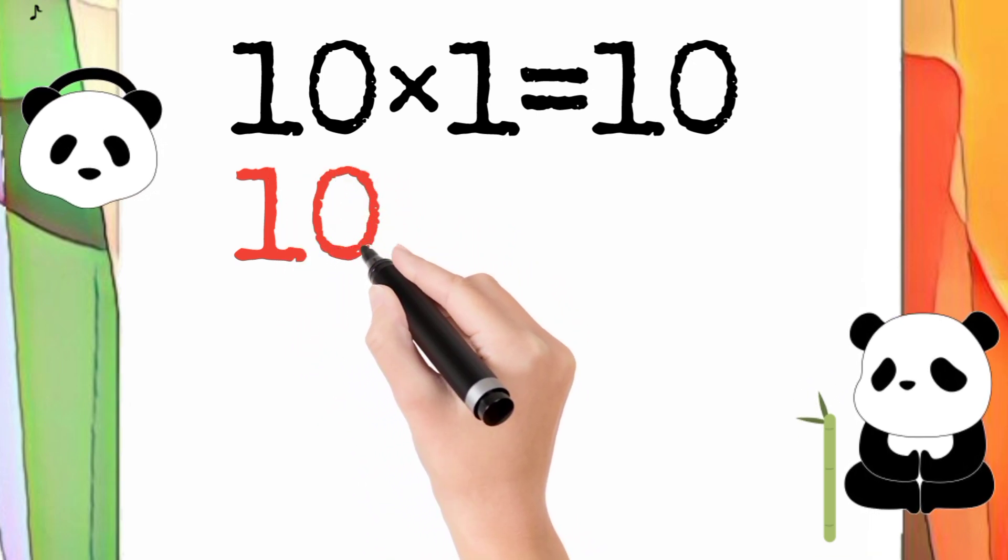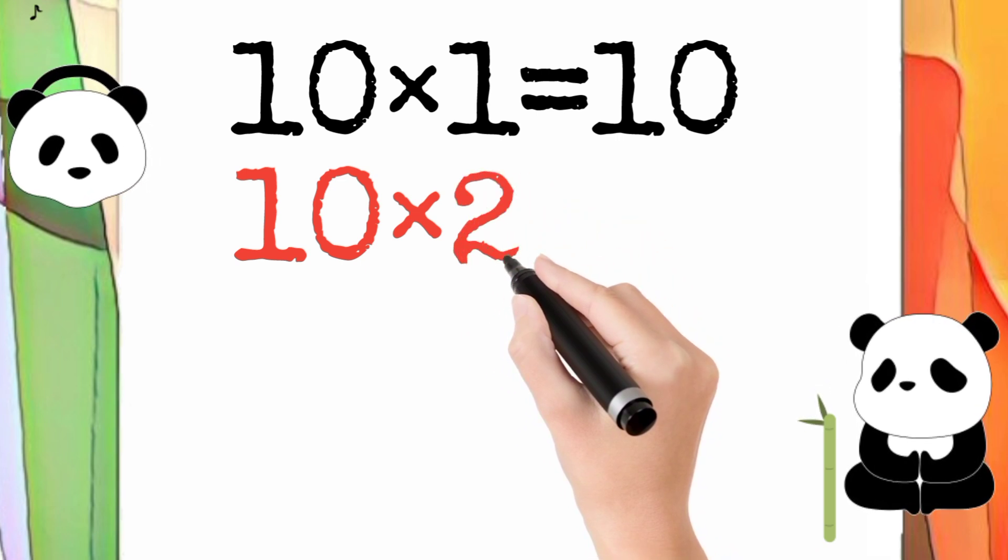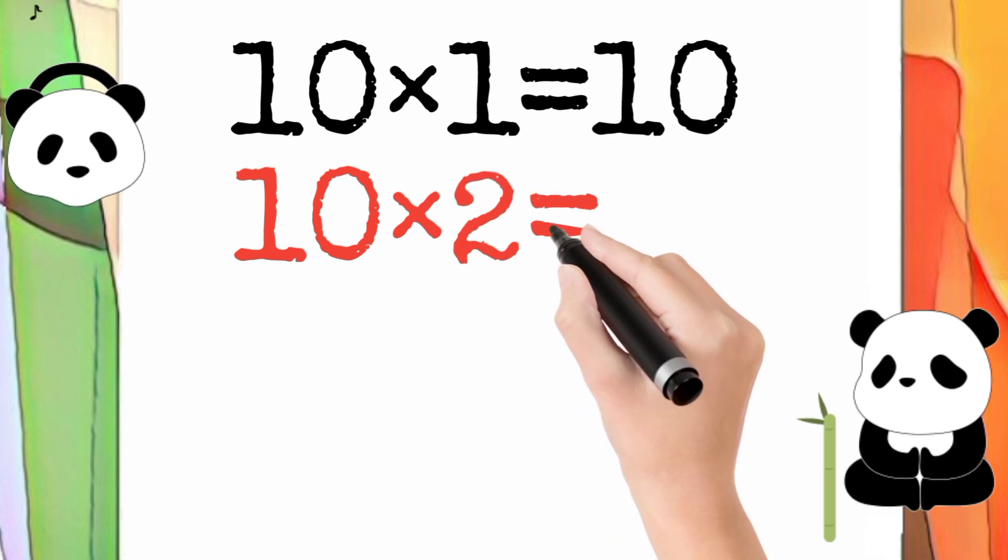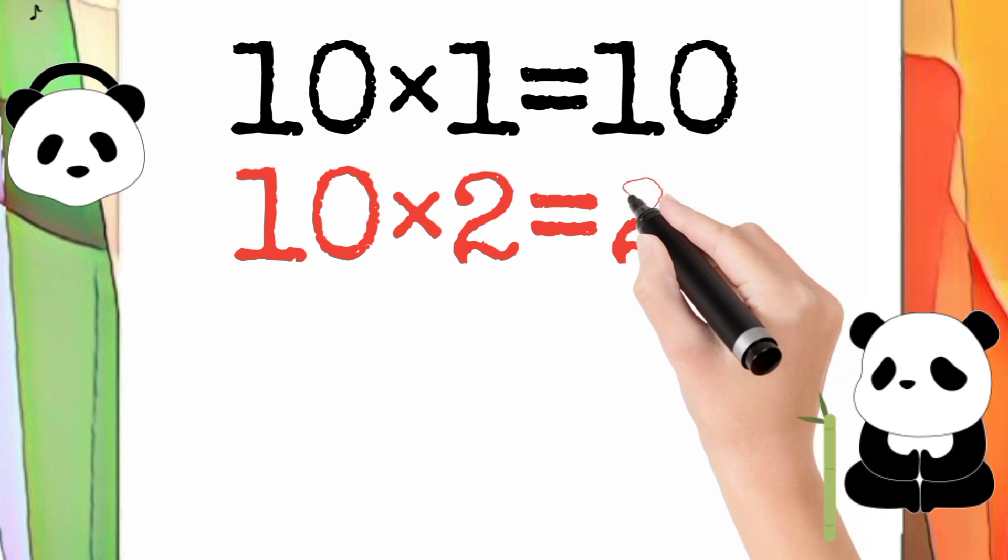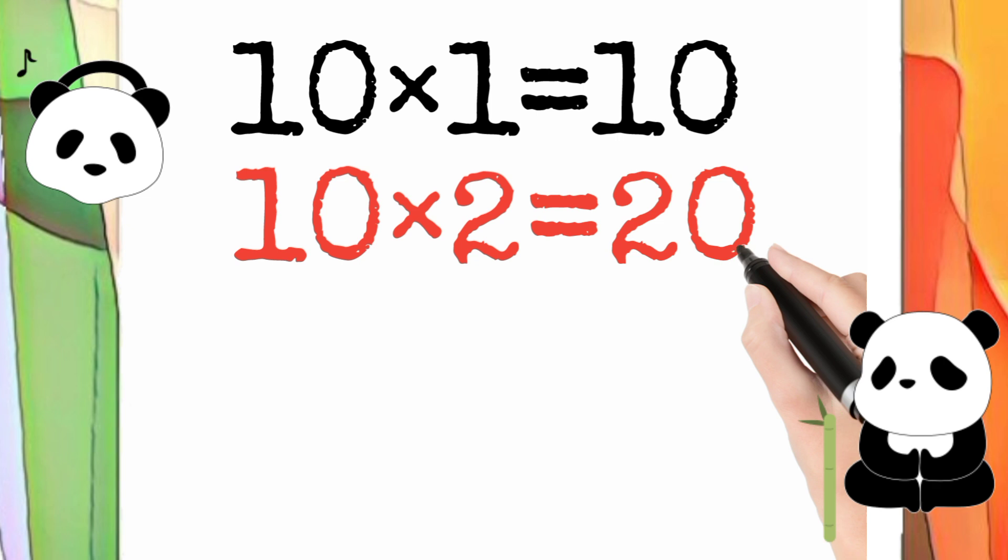10 multiply by 2 is equal to 20. So 10 times 2 equals 20.